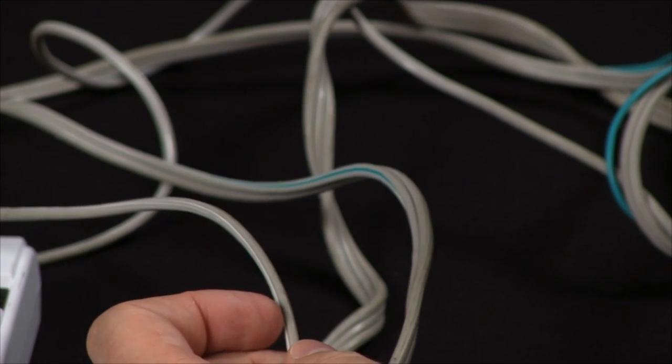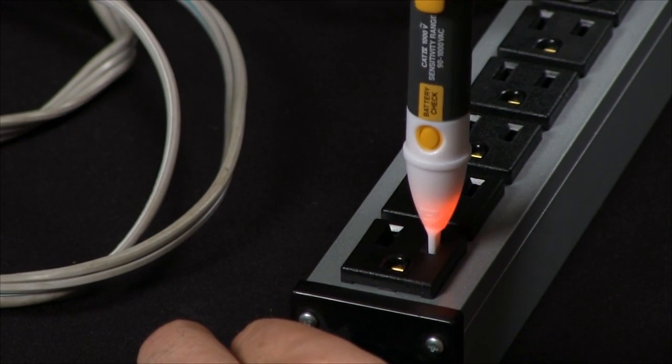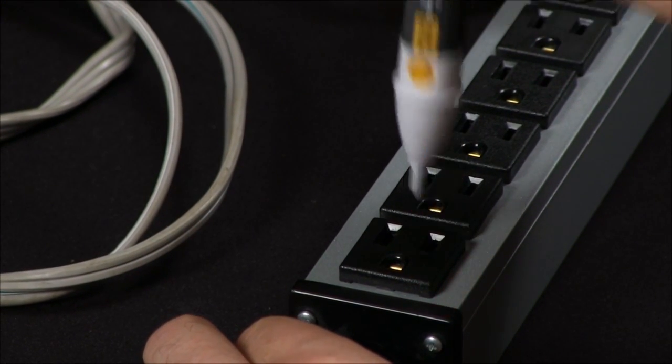You can do the same test with a power strip. Again, place the 2AC into the hot side and then place it into the neutral.